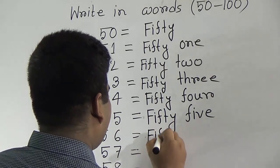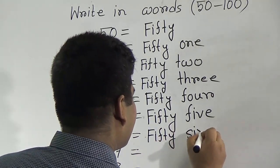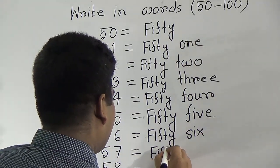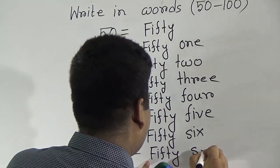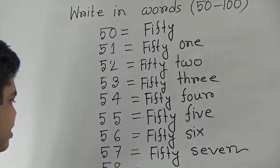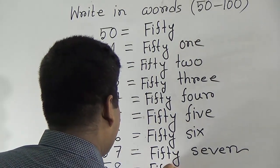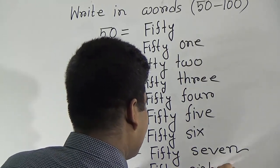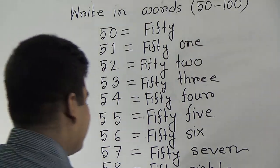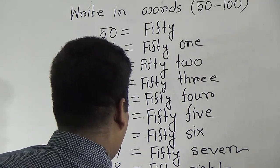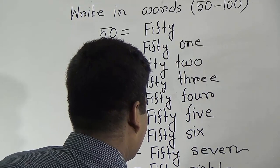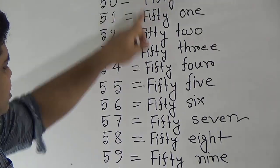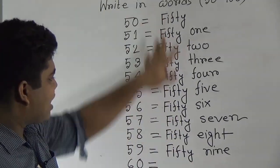56 done. Then 57: so we write fifty first — F-I-F-T-Y — and then write 7: fifty-seven. 58: now we write 58, so write E-I-G-H-T — fifty-eight. Then 59: so write fifty first — F-I-F-T-Y — N-I-N-E — fifty-nine. OK my dear students, 50 to 59 done. Just like this, we shall learn 60 to 69.